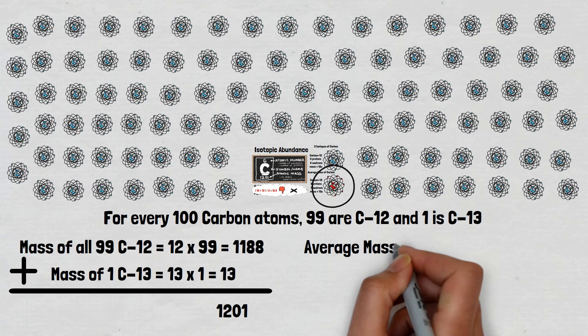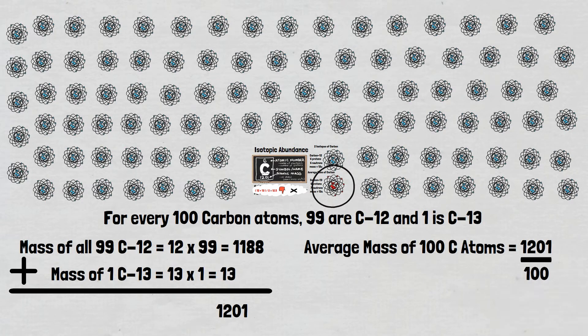Then we'll divide by 100, the total number of atoms. When we do that, we get that magic number 12.01, seen on your periodic table.